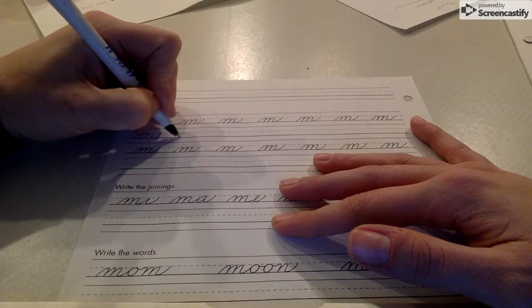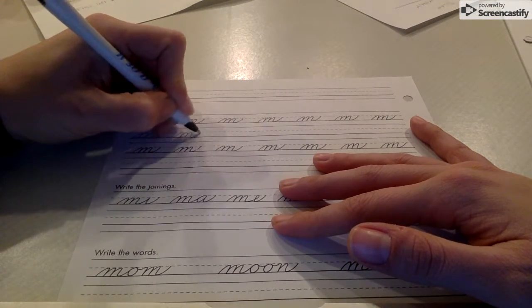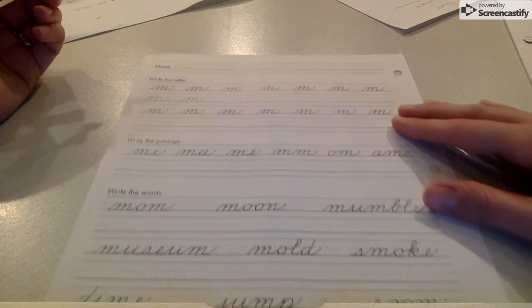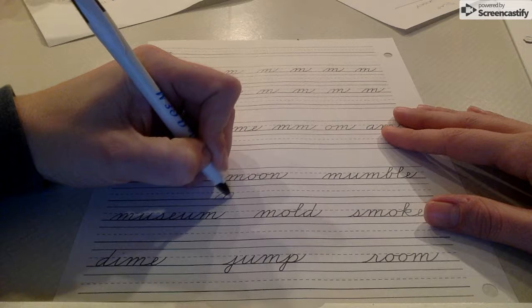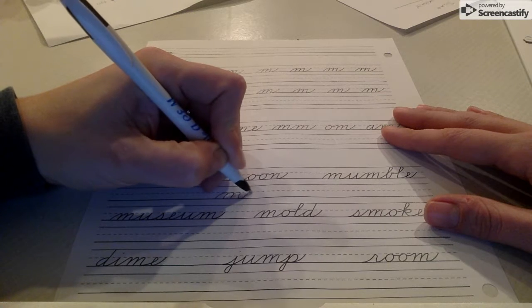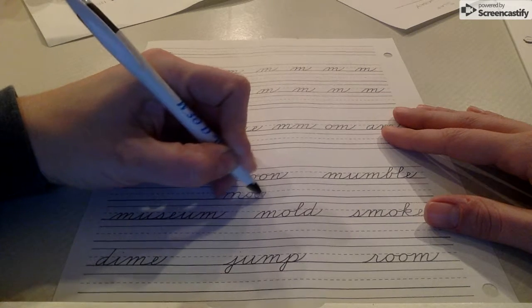So our hump to start it, and now the M and the tail. Looks like it has three humps. So look down here at moon. We have our hump to begin with, the two humps for the M, and then our tail into our other letters.